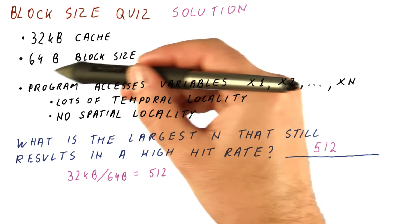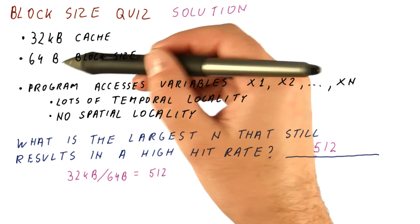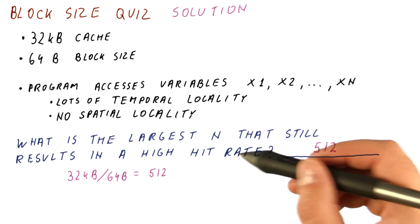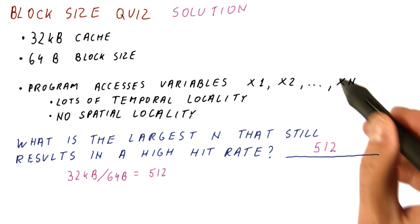But because we are fetching an entire block when we have a miss, we will not have a good hit rate if we have more than 512 of these variables.